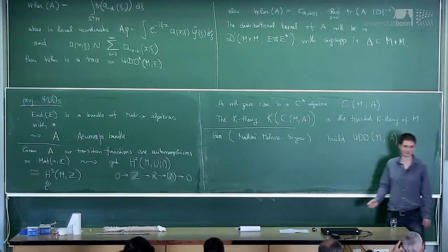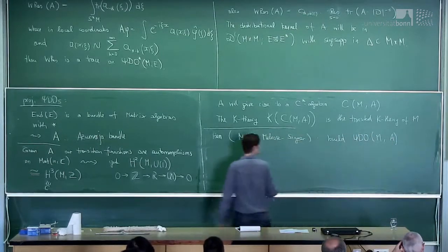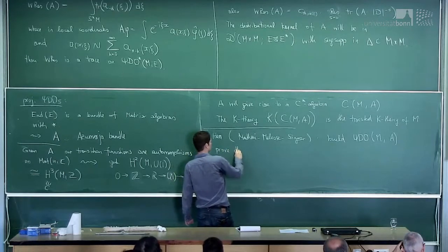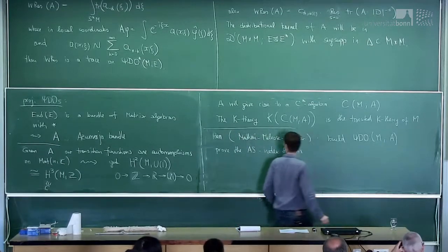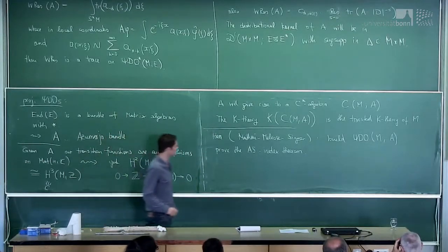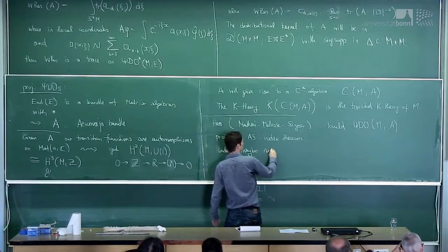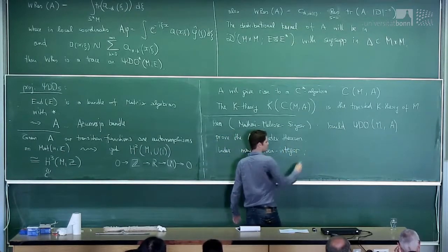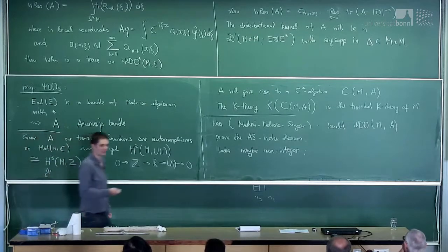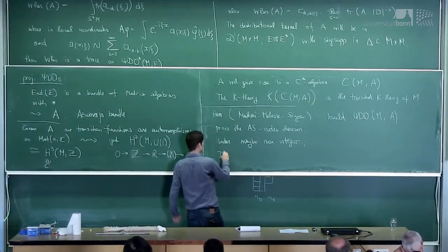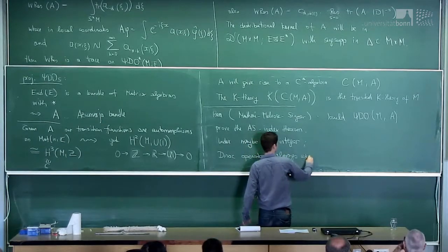Something amazing: the index of an operator might be non-integer — it might be rational. So they proved the Matai-Singer index theorem. What is also good is that the Dirac operator always exists in this category, even without spin structure. So for example you can compute the index of the Dirac operator on CP^2, which doesn't have a spin structure. Dirac operators always exist in this category.